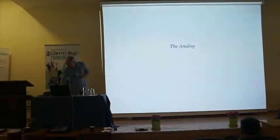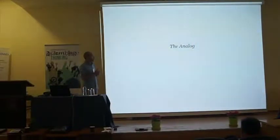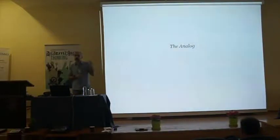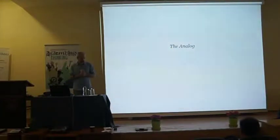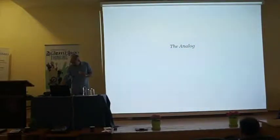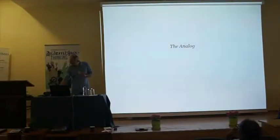So what I try to do is figure out how we can find a different way to approach this whole situation. This is where the concept of the assemblage is helpful, along with another concept from the work of Deleuze — the concept of the analog, which comes from the book he wrote in the 1980s about Francis Bacon, called The Logic of Sensation.